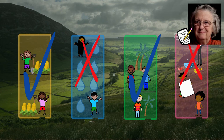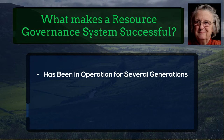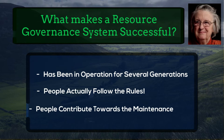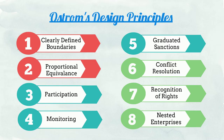She called these the design principles. According to her, a resource governance system is successful if it has been in operation for a very long time, like several generations; people in the community had actually been following the rules all this time; and people like the governance system so much that they also contribute towards its maintenance by providing physical labor or financial help whenever required. Based on these criteria, Ostrom found that there are eight design principles that generally make some communities more successful than others in managing their environmental resources.